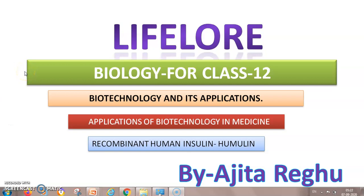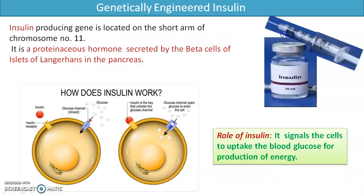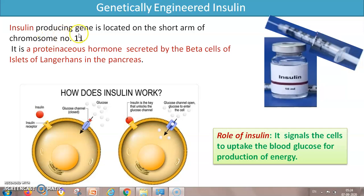We'll talk about the applications of biotechnology in medicine — specifically recombinant human insulin called Humulin and how it is synthesized. But first, what is insulin and how is it produced in our body? The insulin-producing gene is located on the short arm of chromosome number 11 in humans. Insulin is a proteinaceous hormone secreted by beta cells, which are found in the islets of Langerhans of the pancreas. The role of insulin is to signal cells to take up glucose from the blood.